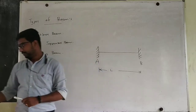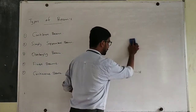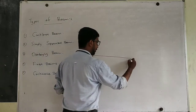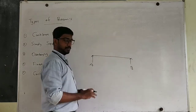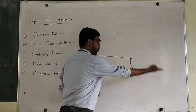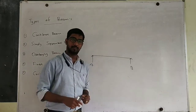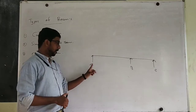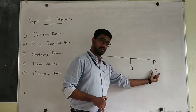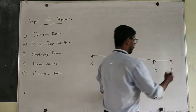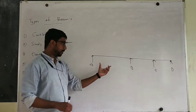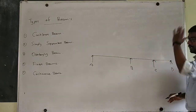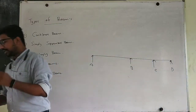Fixed beam. This is the last type. Continuous beam. A continuous beam is similar to a simply supported beam but has more than two supports. If a beam has more than two active supports — three supports A, B, C — it is called a continuous beam. A simply supported beam has two supports A and B; a continuous beam has three or more supports.